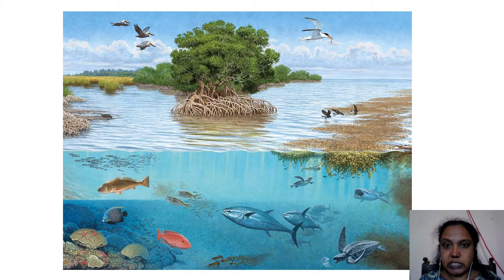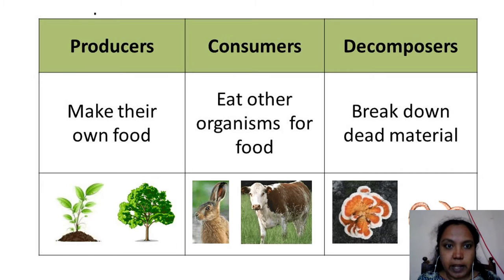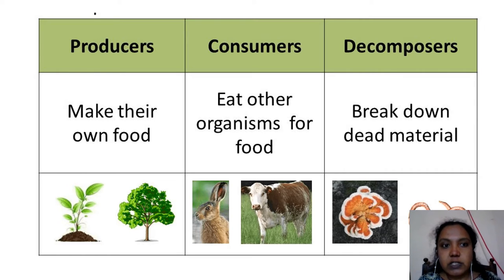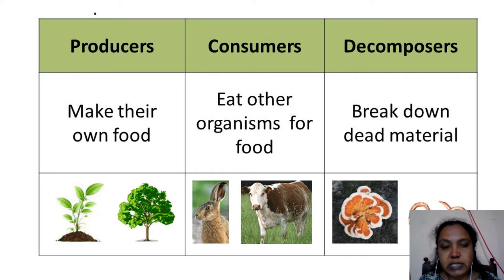Thank you for the answers and we will discuss them at the end of the class. The organisms in an ecosystem are classified as producers, consumers and decomposers. Producers are those organisms which can make their own food and they form the largest component of all the living things on the earth. Consumers are those organisms which live on producers and on other consumers — that is, they eat other organisms for survival, for food, which is the energy.